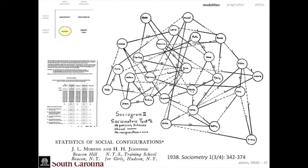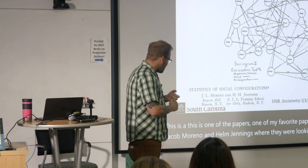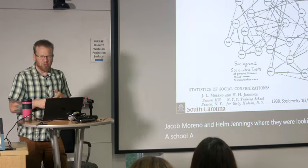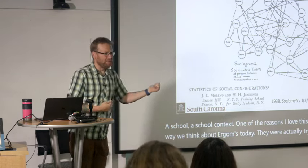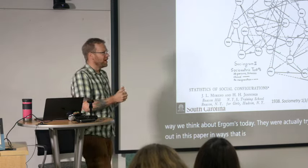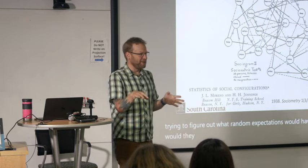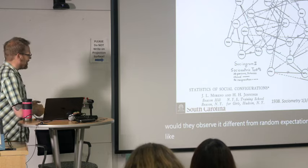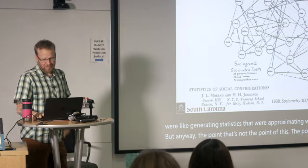Surveys go back to our earliest history in networks. One of my favorite papers is from Jacob Moreno and Hal Jennings, looking at a school context. What I love about this paper is that they were trying to figure out what random expectations would have been and how what they were observing differed from random expectations — generating statistics that approximated what we do today. The point is that surveys are very foundational to us, and there are lots of ways we can collect survey data.